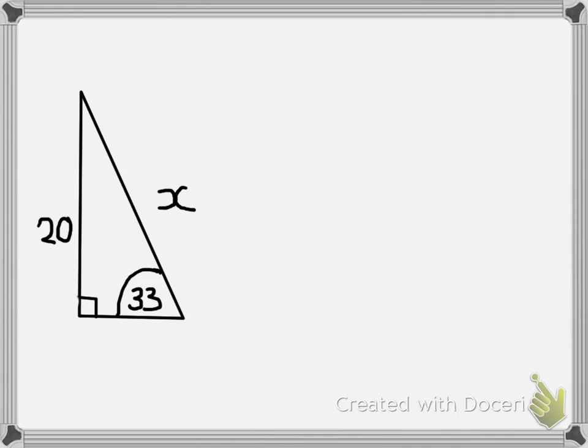The first thing that we are going to do is label the sides of our triangle. We have our hypotenuse opposite the right angle, or also known as the longest side in a right angle triangle. We have our opposite side, which is always opposite the given angle, so in this case it's going to be this side over here with 20. And we have our adjacent side, which is the side next to our angle of 33 degrees.